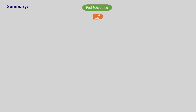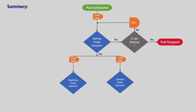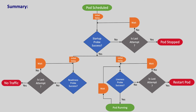Let's summarize how these three probes work together. When a pod is scheduled, Kubernetes waits for initialDelaySeconds and runs the startup probe. If it fails, Kubernetes retries up to the failureThreshold; if it still fails, the pod is killed and follows the restart policy. If the startup probe succeeds, both liveness and readiness probes are executed after initialDelaySeconds. If the liveness probe fails repeatedly, the pod is restarted; if it succeeds, the pod runs and the probe repeats per periodSeconds. If the readiness probe fails repeatedly, the pod is removed from the service; if it succeeds, the pod receives traffic and the probe repeats per periodSeconds.